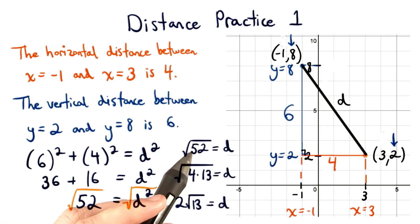Simplifying the square root of 52, we'll get d is equal to 2 times root 13. This is our simplified distance.